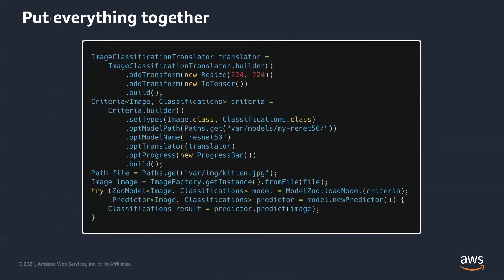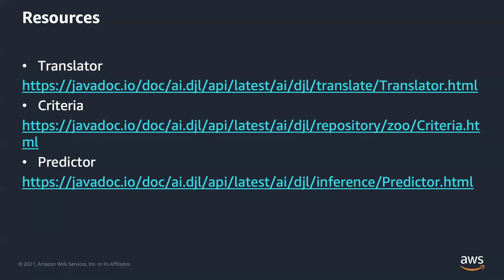In summary, to run inference with DJL: you create a translator, load the model with Criteria API, create a predictor from a model, and finally call predictor.predict. This is how powerful DJL is. Here are the translator, criteria, and predictor Javadocs — you can find more detail there.